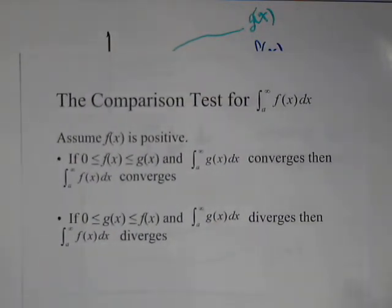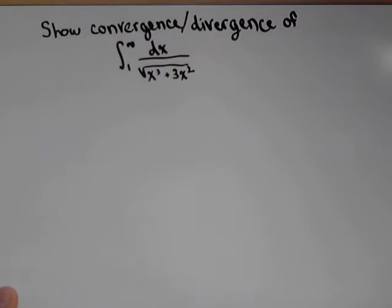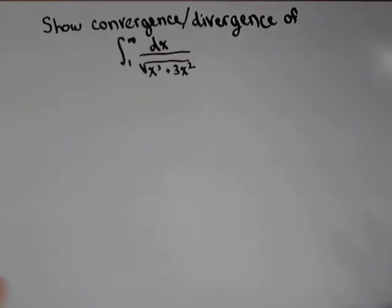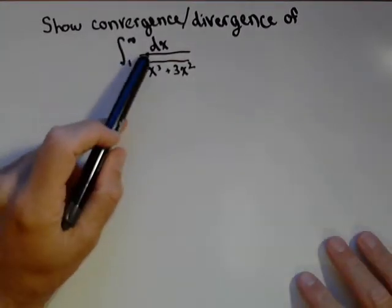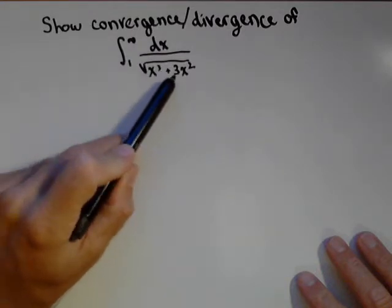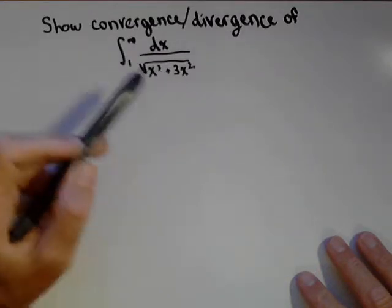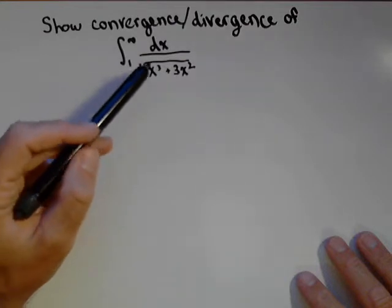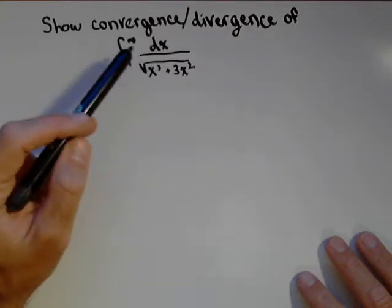Let's go ahead and run an example and see how we use this. So, we're gonna try and show the convergence or divergence of the integral of one to infinity of dx over square root of x cubed plus three x squared. So, what you wanna do is you wanna get an idea of what your function looks like.